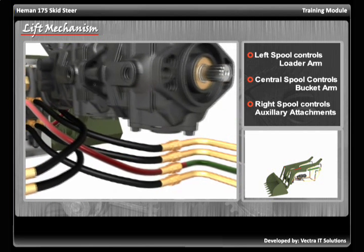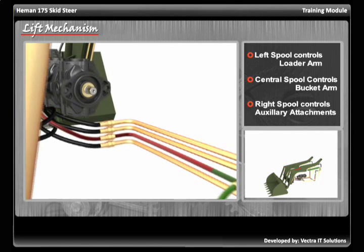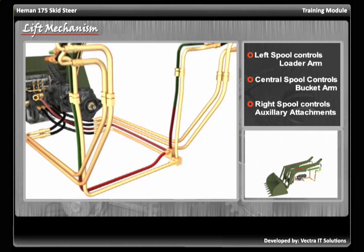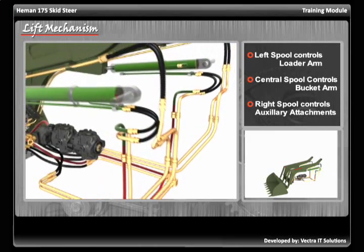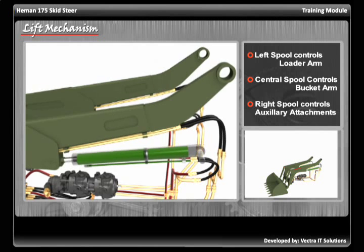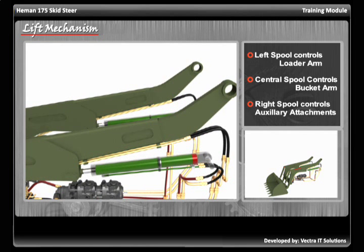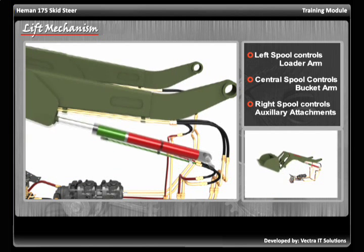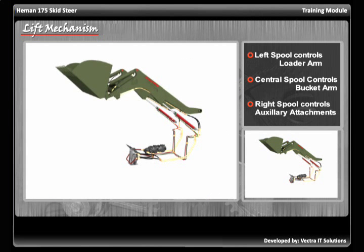The oil travels through the connected hoses to the loader cylinders, pushing the pistons inside the cylinders. This results in opening of the extension rods of the cylinders, ultimately lifting the loader arm.